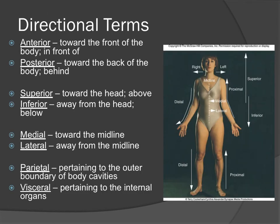Directional terms: anterior, also called ventral, means toward the front of the body or in front of. For example, the breastbone is anterior to the spine, or the rib cage is anterior to the spine. Posterior, also called dorsal, means toward the back of the body or behind. For example, the heart is posterior to the sternum.